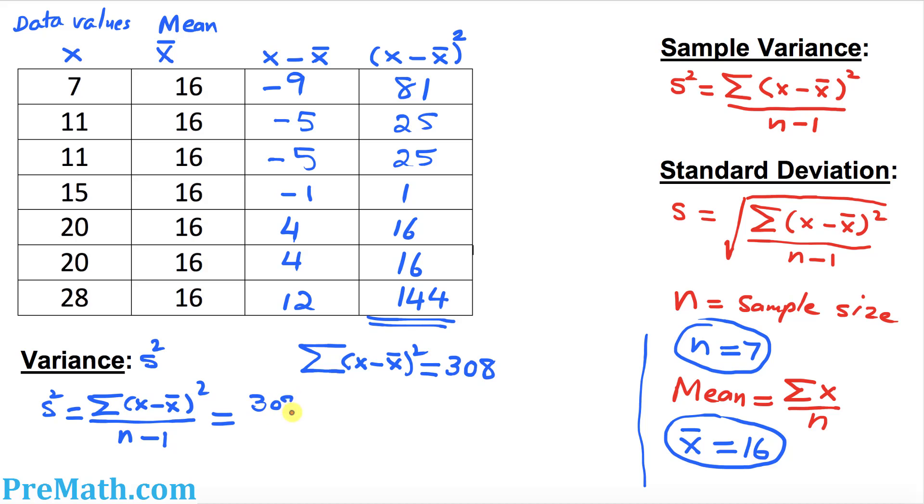Divided by n, which is how much? We know that these data values are seven of them. 7 minus 1 becomes 6. Of course, 308 divided by 6 is going to give you 51.333 and goes on and on. This is our variance.